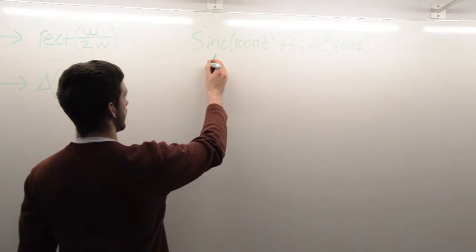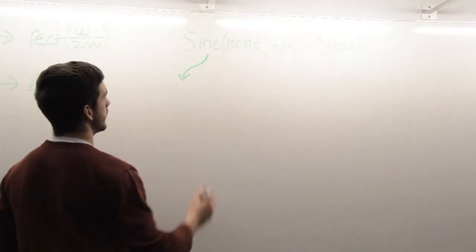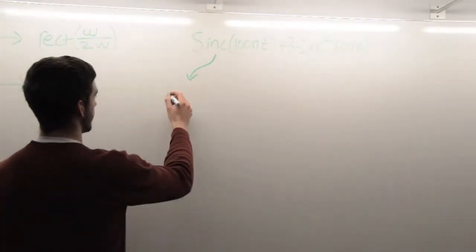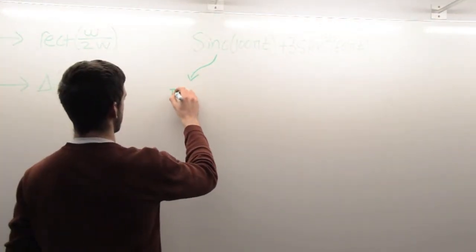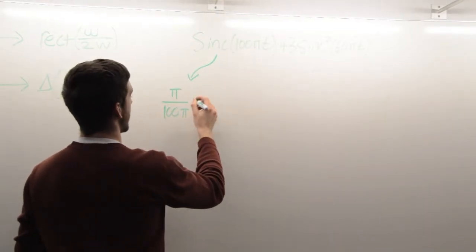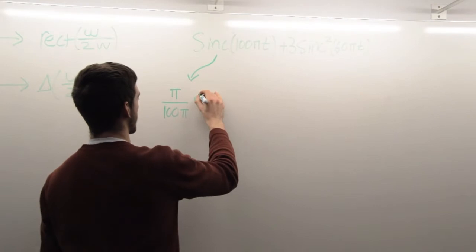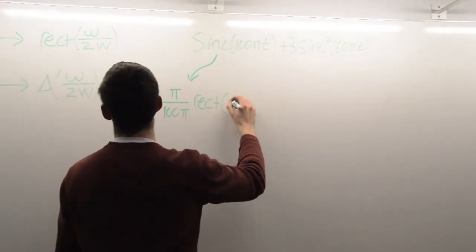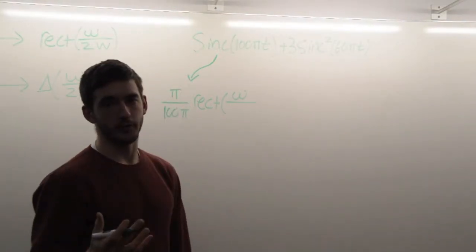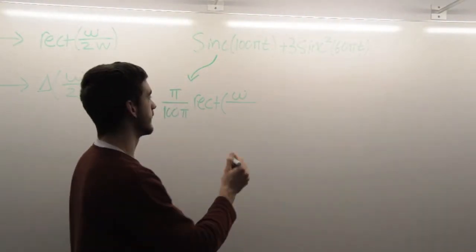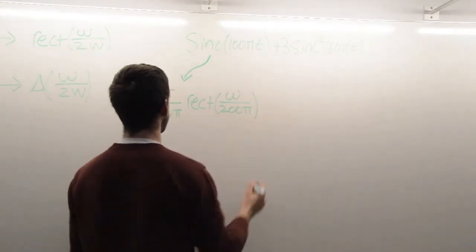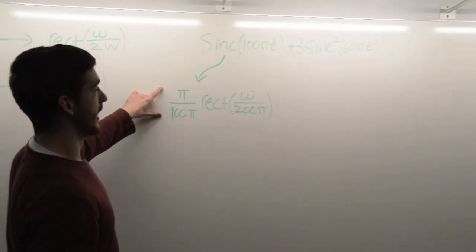The Fourier transform, remember we have to multiply by pi over w to compensate for what the equation says. So we have pi over w, which is 100 pi, and then we're multiplying that by the rectangle function of omega over 2w, which is 200 pi. So that's that Fourier transform.